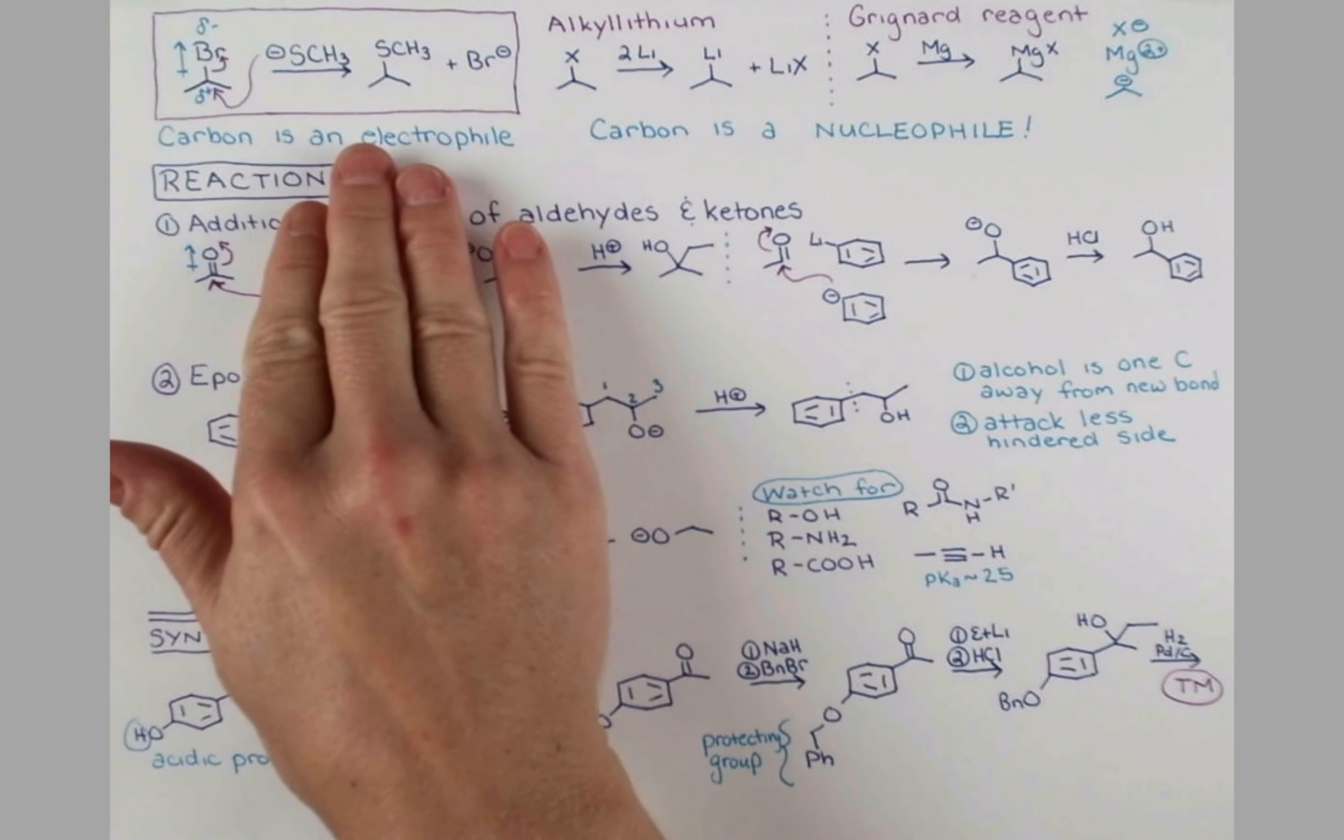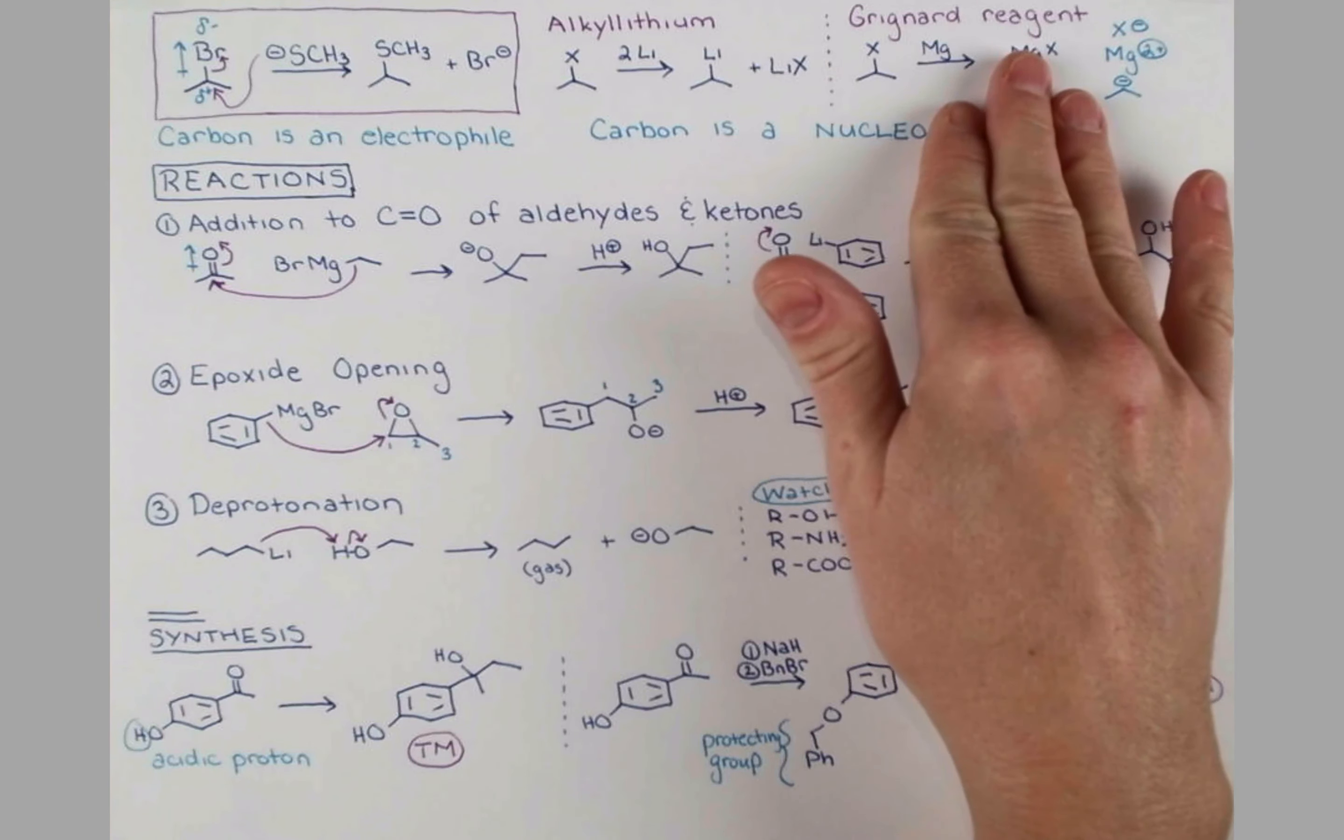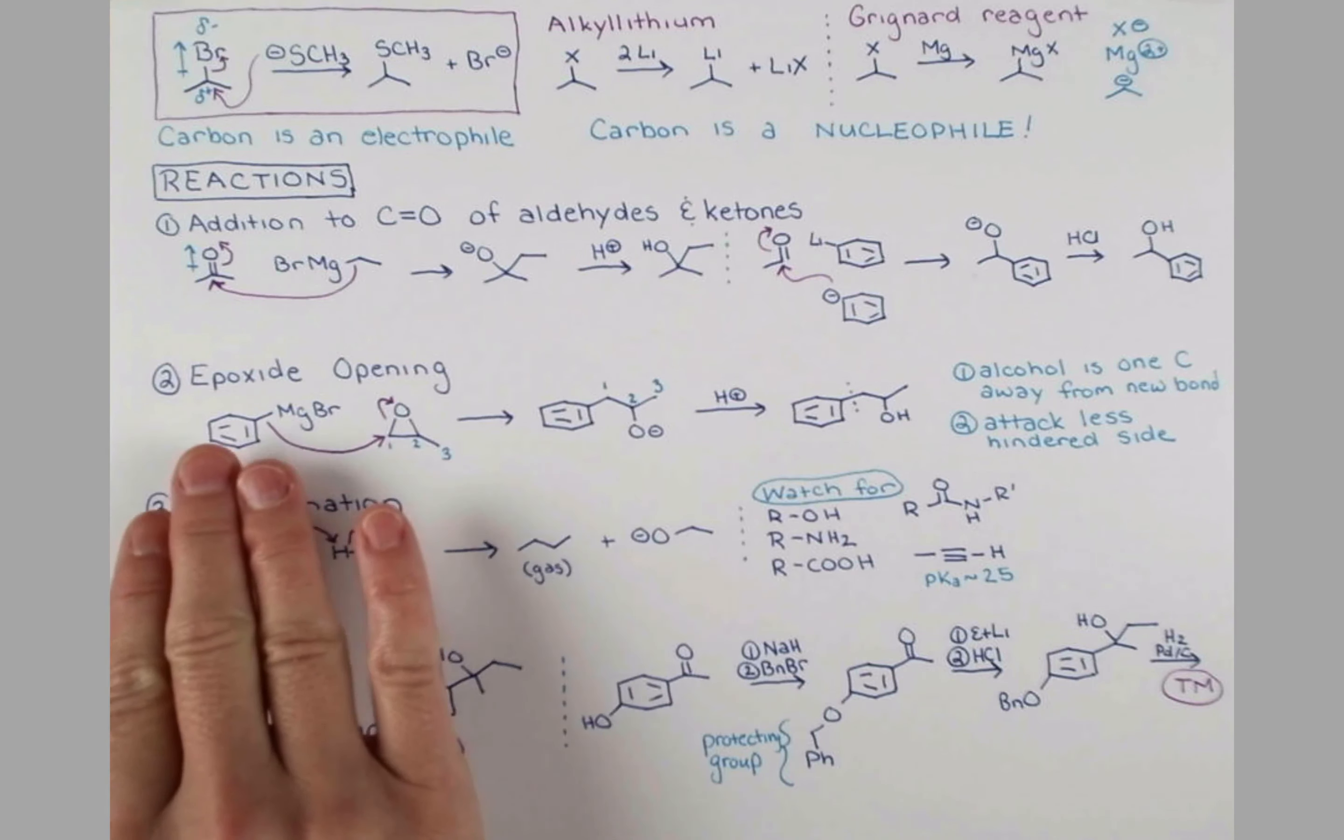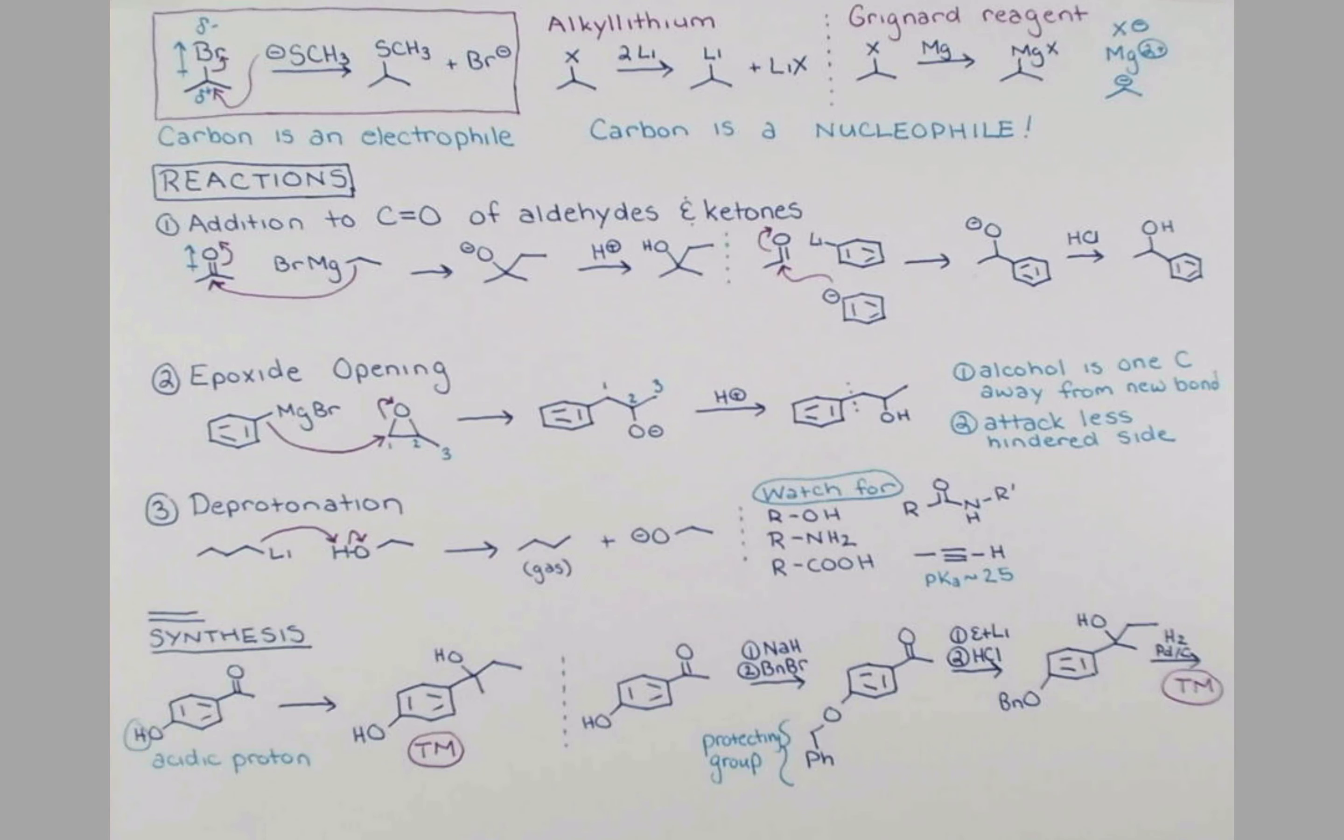In this lesson, we learned how to turn carbon from an electrophile into a nucleophile via an alkyl lithium and Grignard reagent. We learned two reactions to form carbon-carbon bonds, the addition to the carbonyl and epoxide opening. We also learned that Grignard reagents can deprotonate things quite well. They are strong bases. We learned some groups to watch out for if you're not trying to deprotonate things and actually trying to form a carbon-carbon bond. And finally, we looked at an example of a synthesis that used a protecting group to avoid deprotonation. I hope you learned something. If you did, please click that notification bell so we can do more chemistry together.